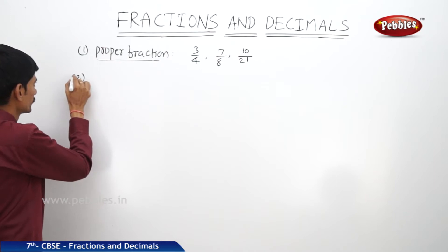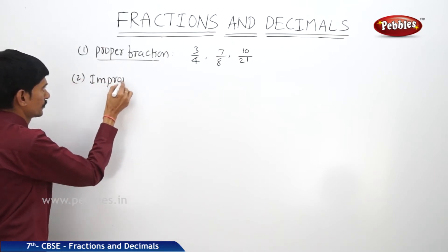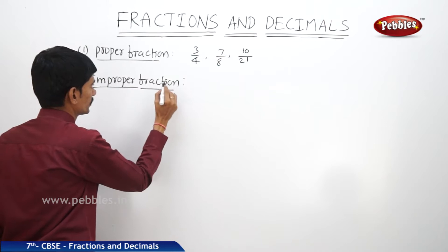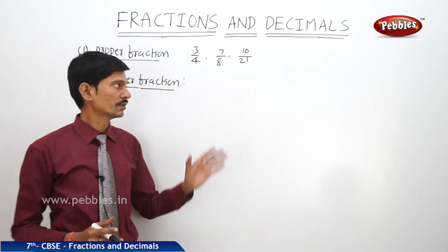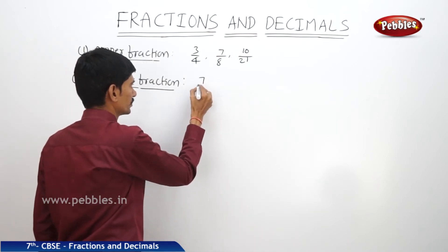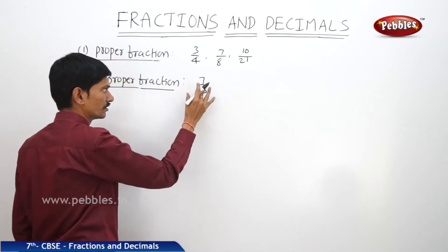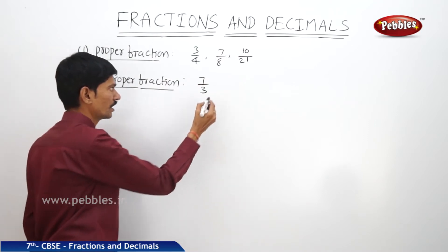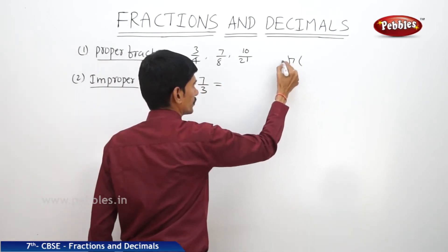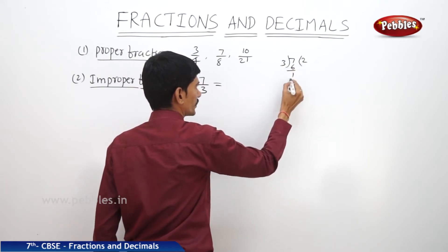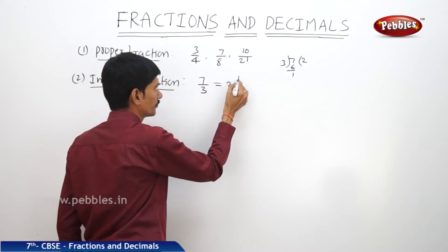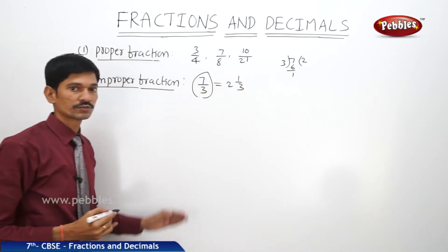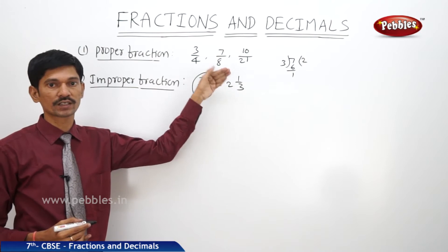When you write an improper fraction, it is the combination of a whole number and a proper fraction. For example, 7/3 — if you divide 7 by 3, we get 3 twos are 6 with remainder 1. So this can be written as 2 and 1/3. In all improper fractions, the numerator is greater than the denominator.